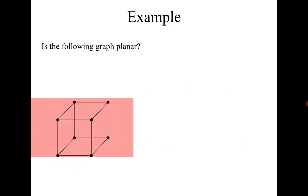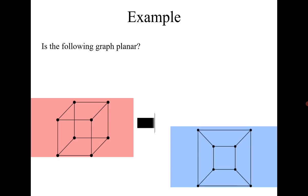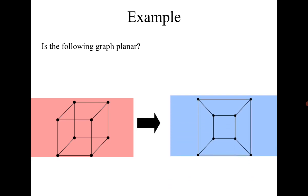Let's try one more example. It is very easy to prove a graph is planar — if there exists a planar drawing and you can draw it. The difficult part is showing non-planarity, because you cannot argue that you tried all possible drawings and none can be drawn without edge crossing. That argument does not work mathematically. This graph is planar, and here is its planar drawing.